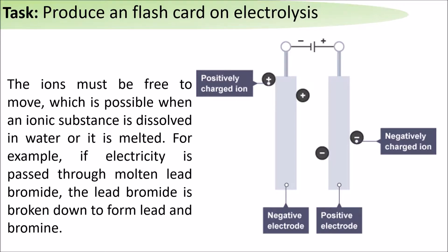For example, if electricity is passed through molten lead bromide, the lead bromide is broken down to form lead and bromine, which can move to either electrode.